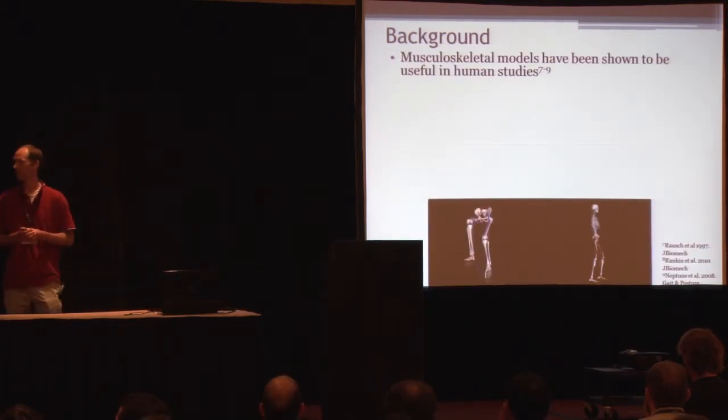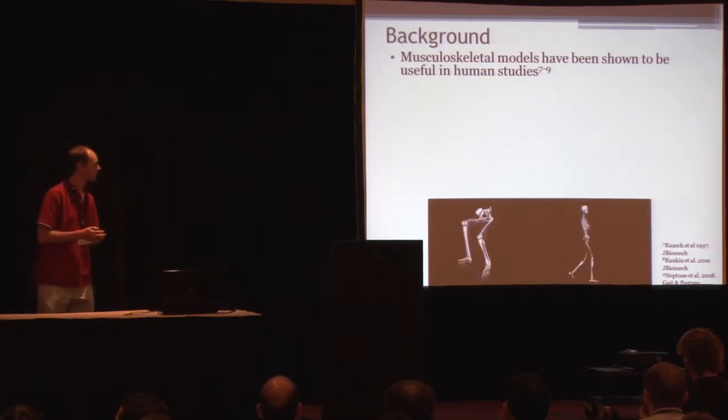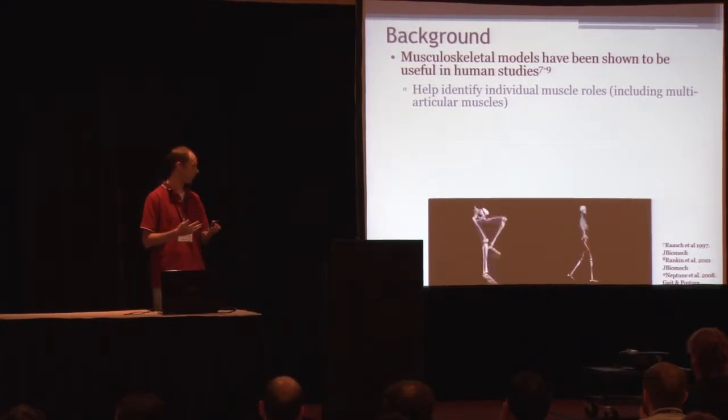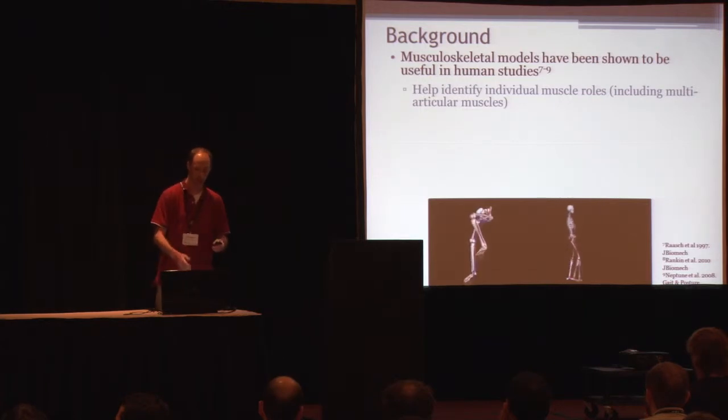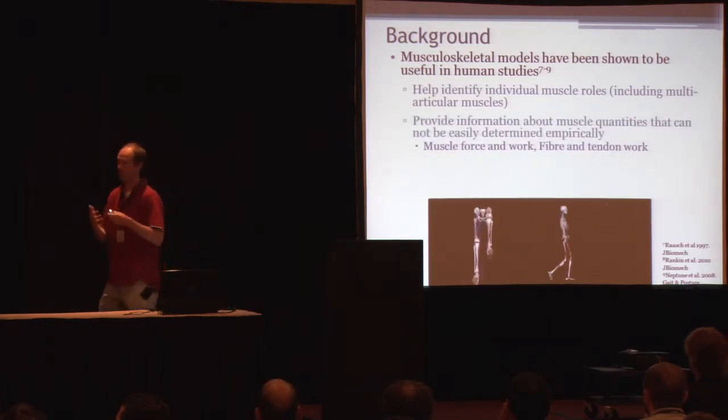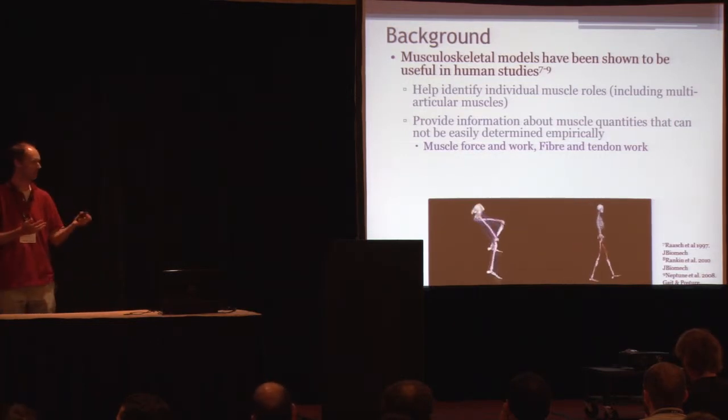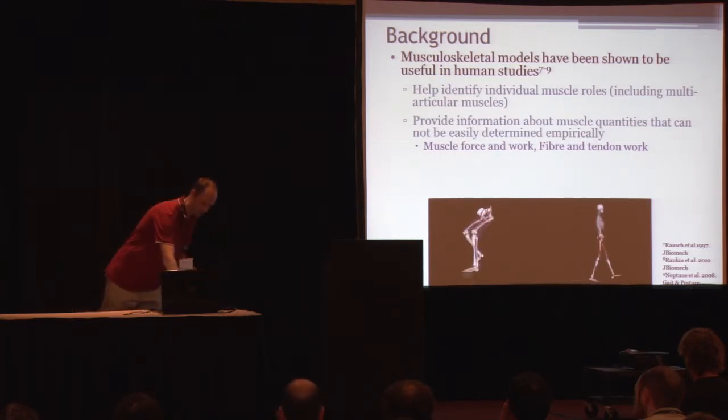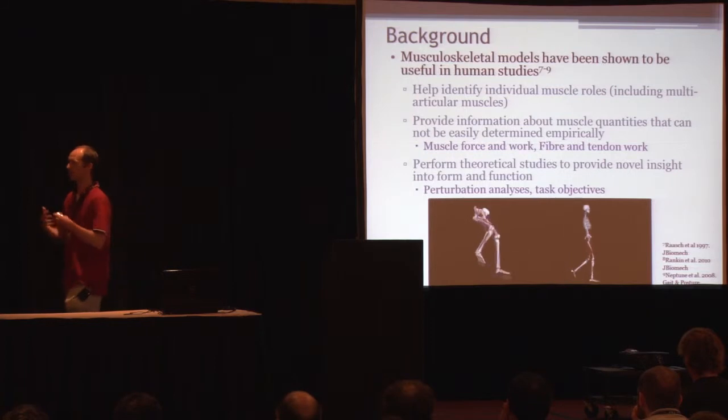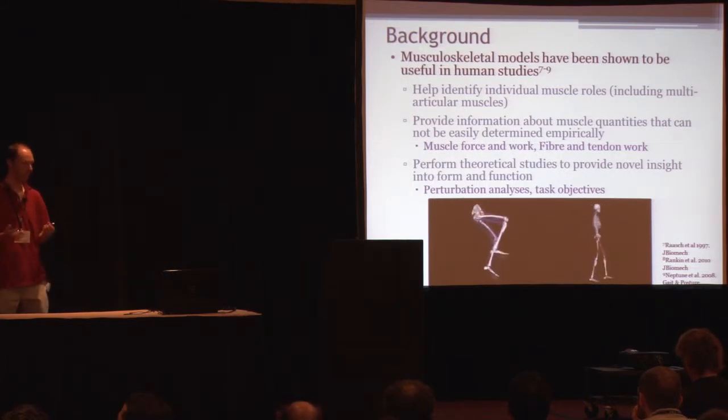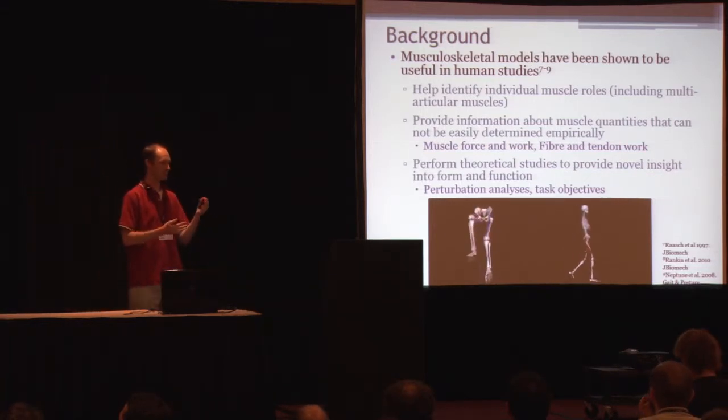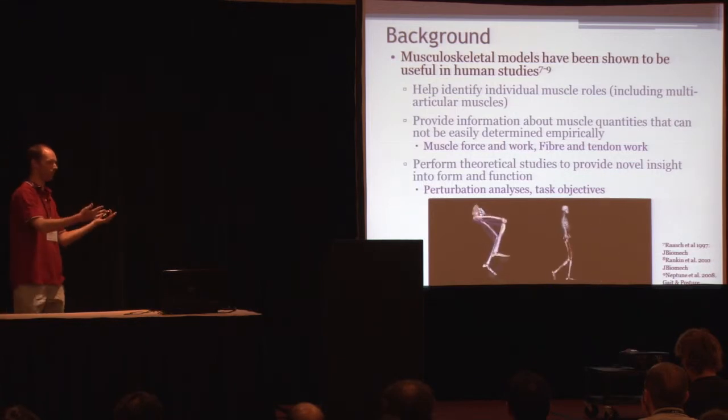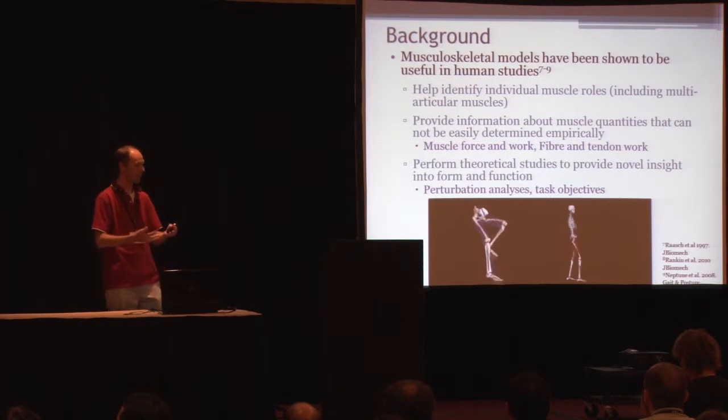The reason that we use musculoskeletal models, and that I use musculoskeletal models from my clinical background, is that they're really useful. They've been shown to be quite useful in human studies. They've answered questions such as individual muscle roles during a wide variety of movements, both lower extremity like cycling and walking, as well as upper extremity movements. They've also provided information about muscle quantities that we can't really get empirically very easily. So if you want to know muscle stress or muscle forces, fiber and tendon work, those aren't very easy to get empirically. Using a model allows us to do that without being so invasive on the animals. The last thing that's great about models is that we can perform theoretical studies to determine more information on form and function. So if we knock out a muscle, how does the model respond? If we strengthen a muscle, how does the model respond? To give us insights into how these muscles might have developed and are coordinated.